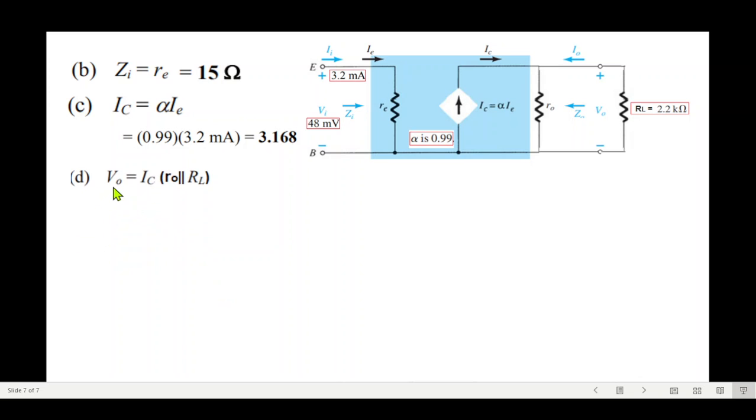Part d, we have to find v out. v out is actually this current multiplied by the resistance in parallel, ro parallel rl. But ro is very high value as compared to rl, therefore the parallel will result in simply rl. So our equation will be ic multiplied by rl. Plugging in the values of ic and rl, this will be v out.